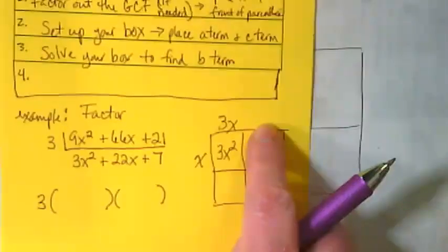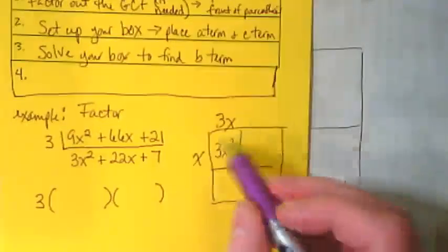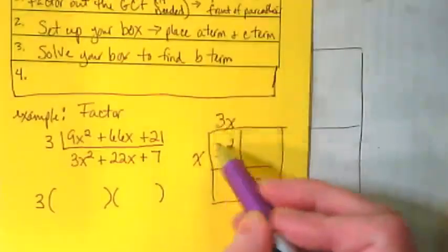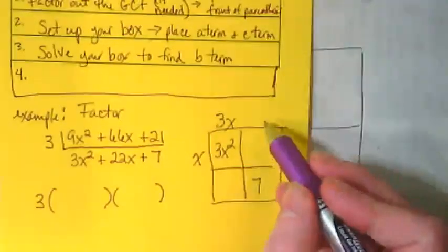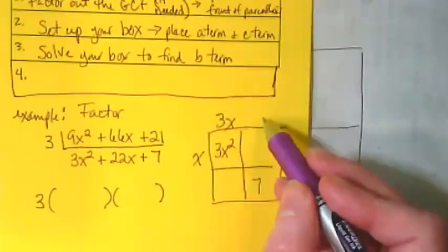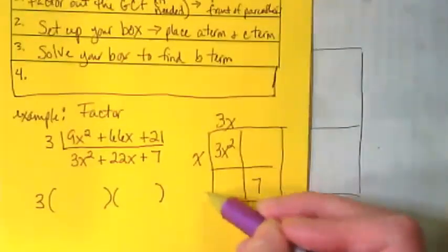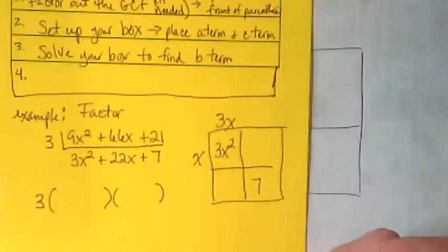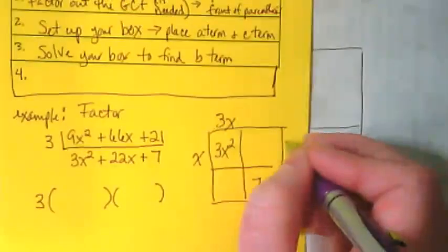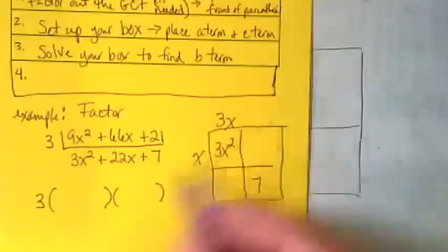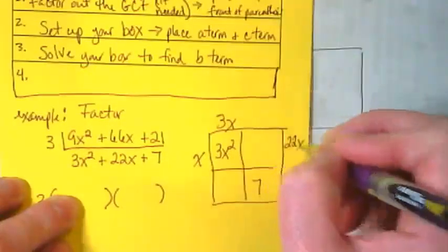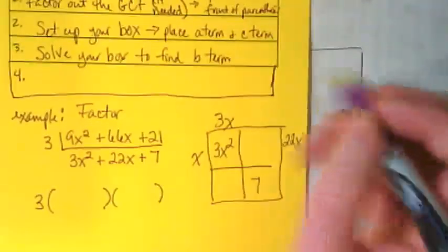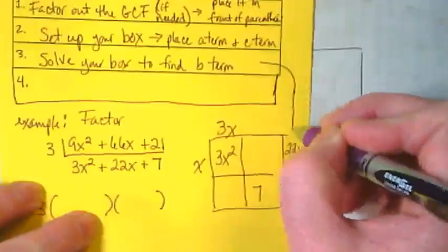But this does matter. It's either going to be 1 or 7 here, or 1 and 7 here. But because of this 3x, it does change where they go. There's a very specific place. See if you can figure out if 1 or 7 goes here, and if 1 or 7 goes here. Because what number are we trying to get? We're trying to get 22x. That's our B term. That's what we're trying to find right now.